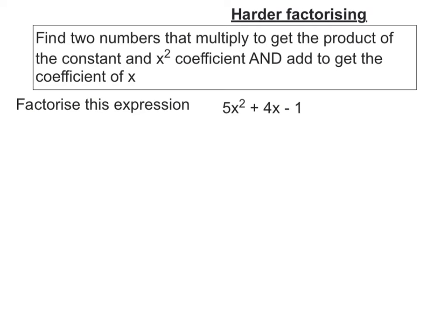Now let's get on to some harder factorising. Why is it harder? Well this time instead of having an x squared coefficient of 1, we now have something greater than that. For instance, this one has 5. So my rule has to change slightly. We're still trying to find two numbers that add to get the coefficient of x, but this time they also need to multiply to the product of the constant and the x squared coefficient.